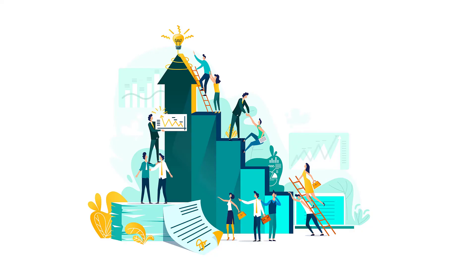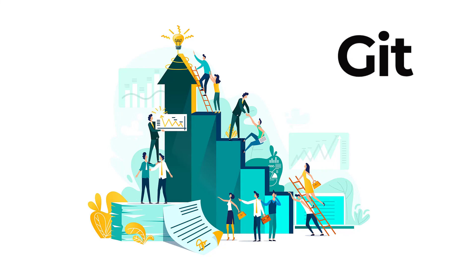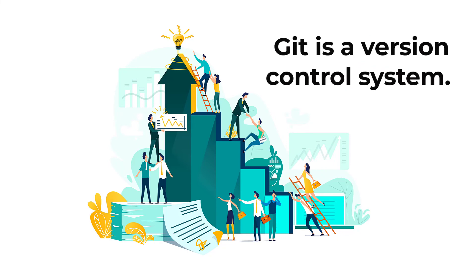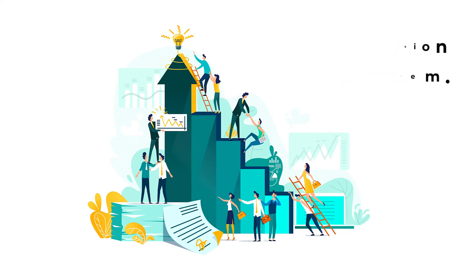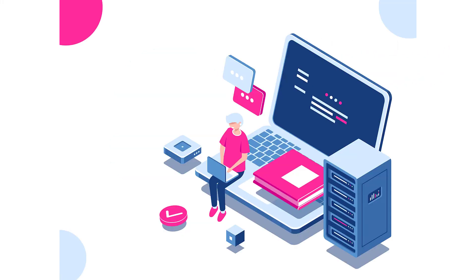Finally, it's important to know Git for machine learning projects, especially if you work in a company. Git is the version control system that helps you do your project as a team. To store your projects, it's also a great idea to use a platform such as GitHub.